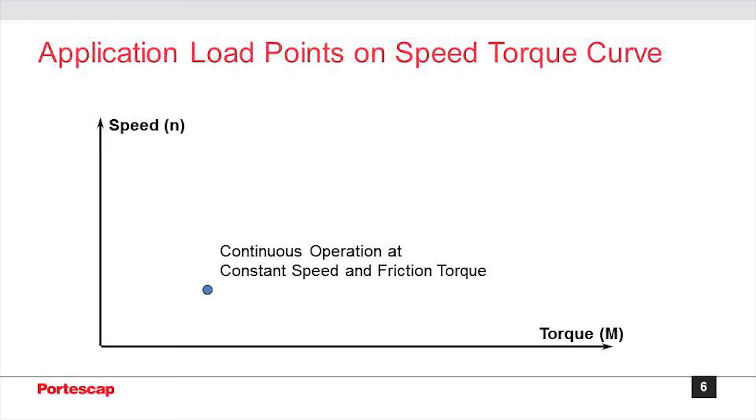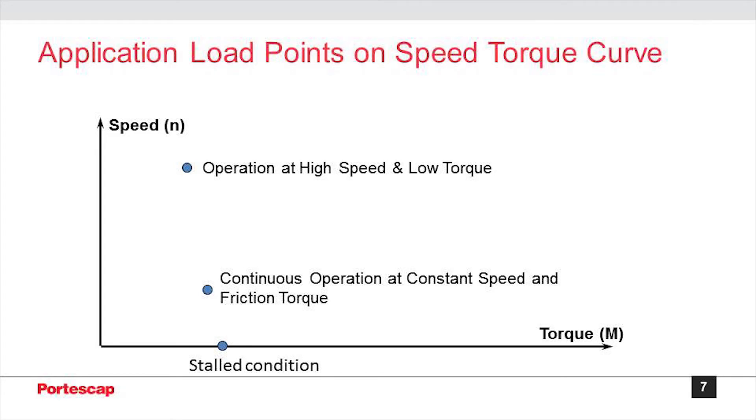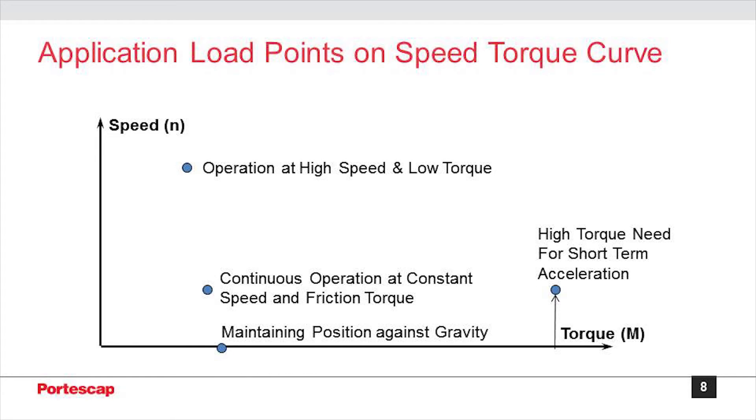In most applications, the motor runs at definite torque and speed shown as a point on the slide. In some other cases, the motor may have to run at a much higher speed while providing lower torque or sometimes the motor would need to work in a stall condition. Some applications may demand the acceleration of the motor and this acceleration would need a higher torque at a higher speed.